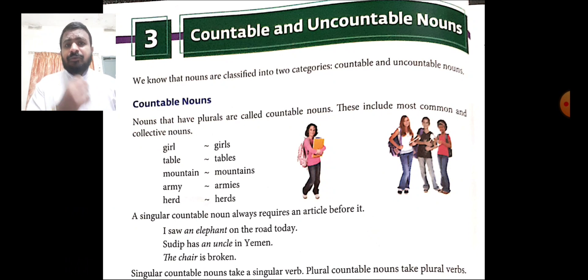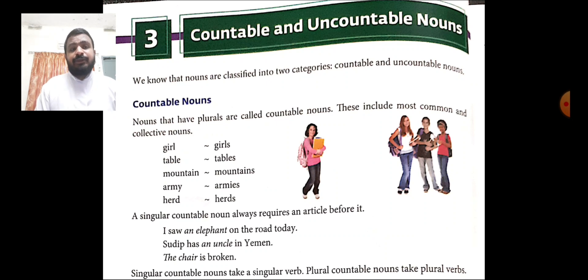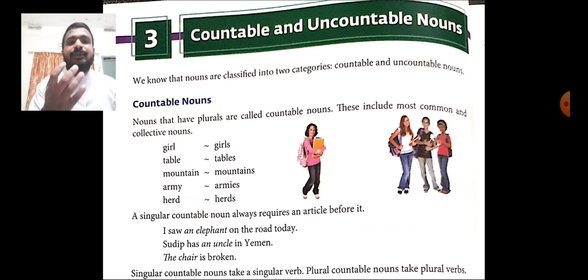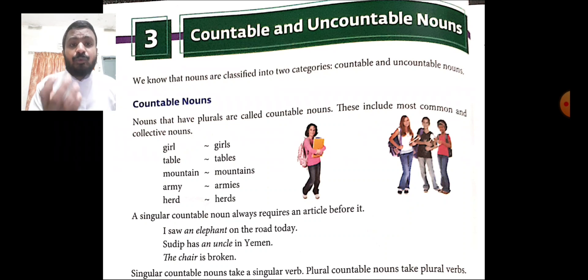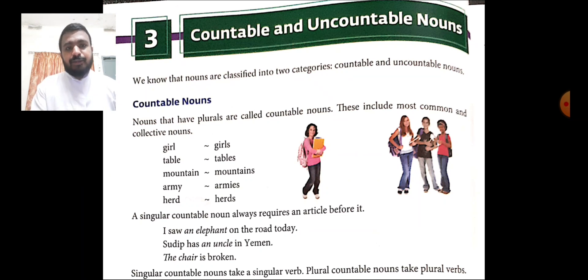Countable and uncountable nouns are categories of nouns. We shall see first what is meant by countable nouns, then we shall go to uncountable nouns. The nouns that have plurals are called countable nouns — those things can be counted. There will be common as well as collective nouns, for example: girl/girls, table/tables, mountain/mountains, army/armies, herd/herds.